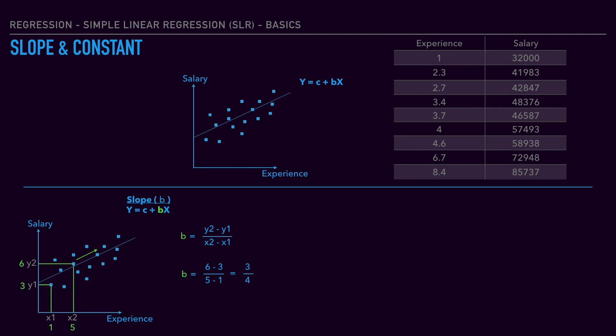So b = (6 - 3) / (5 - 1), that is (y2 - y1) divided by (x2 - x1), which gives 3/4. B has value 0.75. So this is the slope of that particular line. Next, the constant.